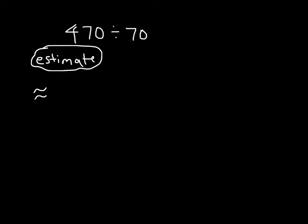Think about multiples of 7. You have 7 times 6 equaling 42. 7 times 7 equaling 49. Yep, that's the closest. 49 is close to 470. So that's 490 divided by 70.